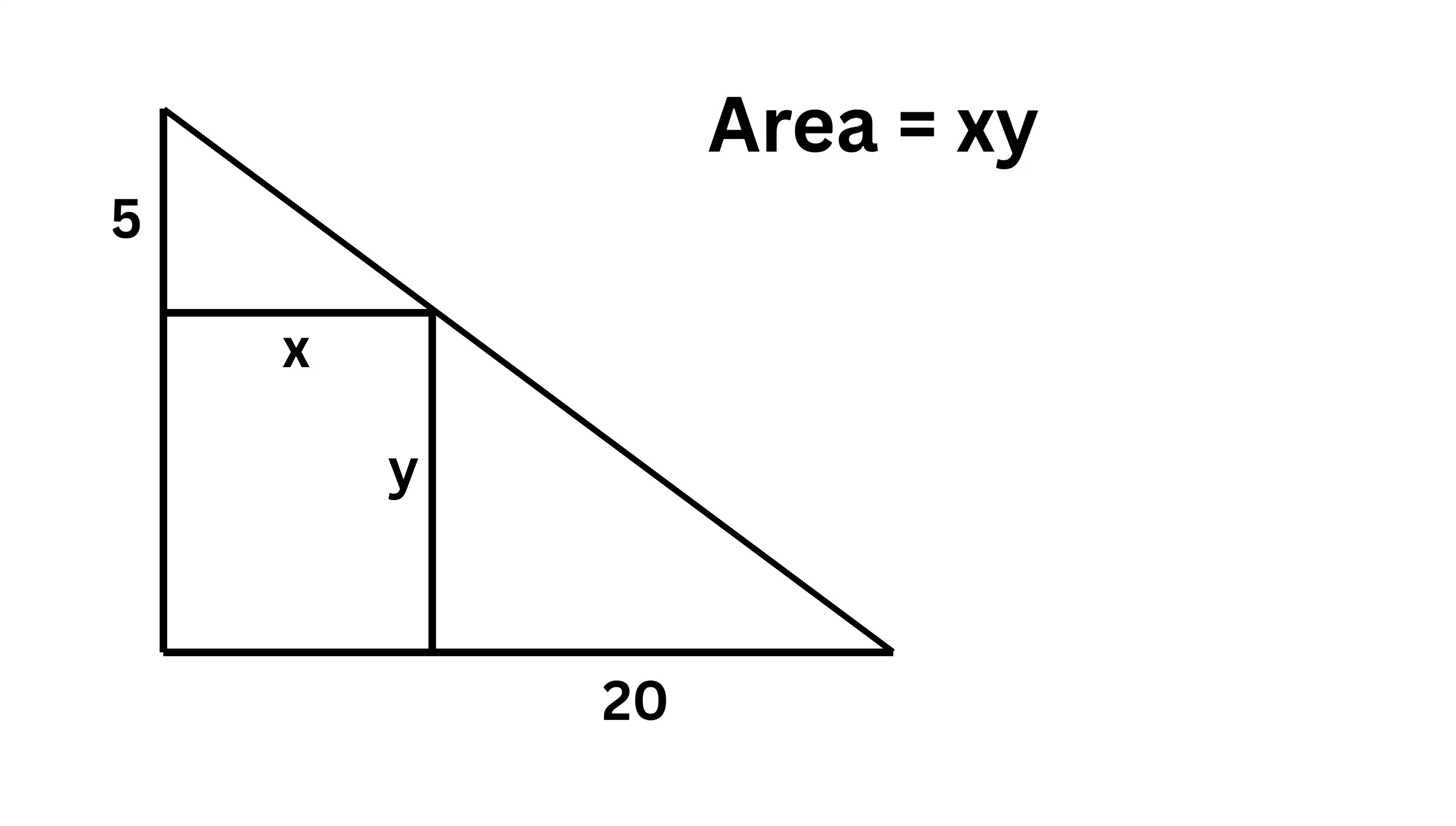Now because these two lines are parallel to each other, if this angle is A then this angle will also be equal to A. Now this angle is 90 degrees and this angle is also equal to 90 degrees, and therefore both these triangles are similar to each other.